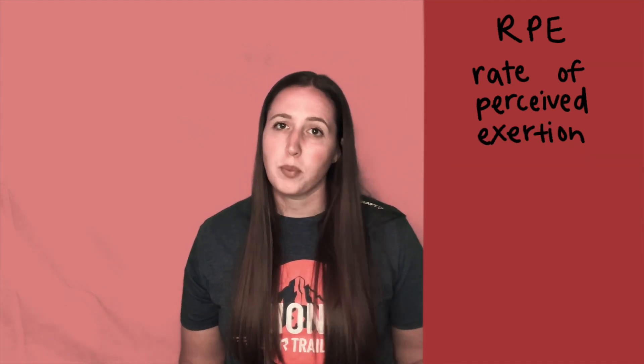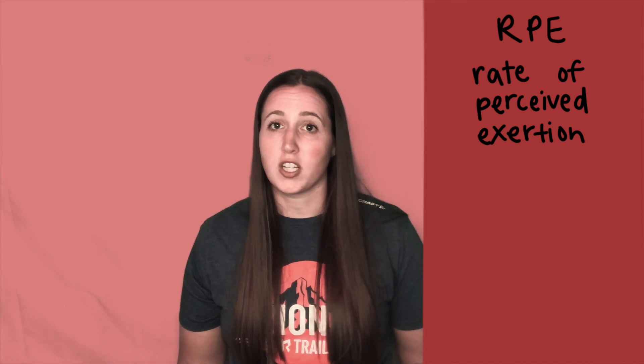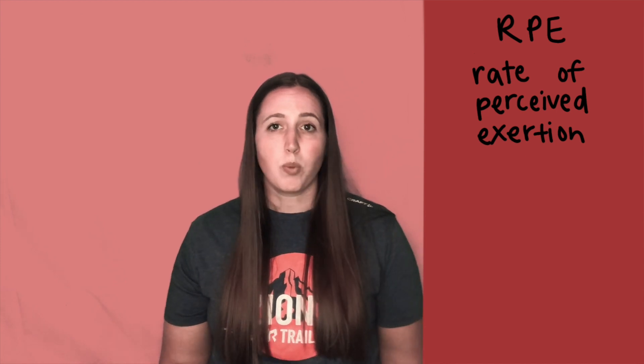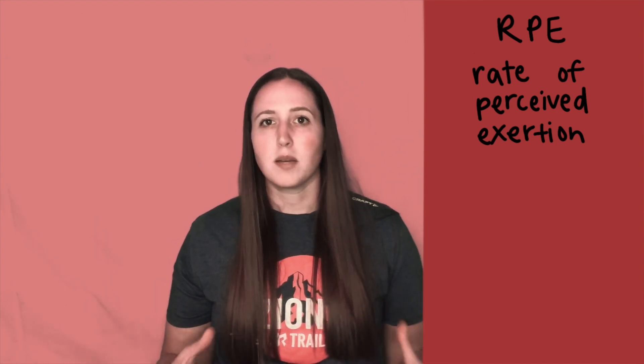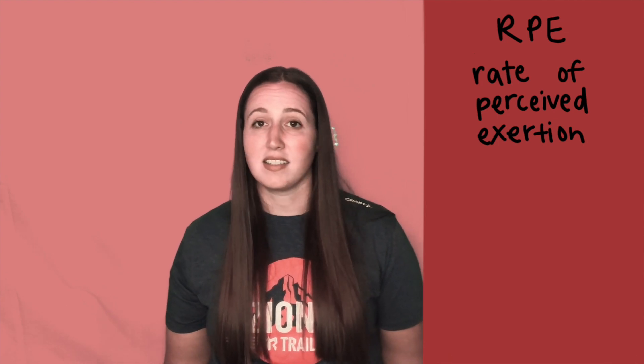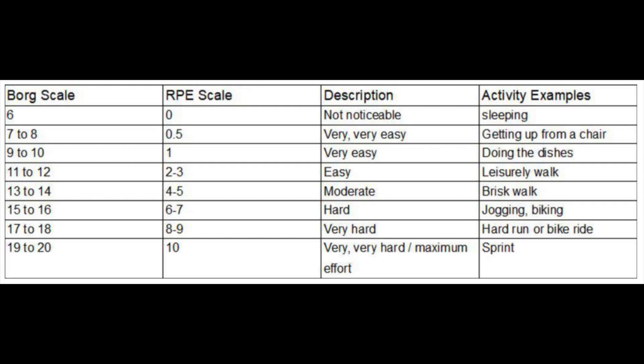RPE is rate of perceived exertion, also known as the Borg or the modified Borg scales, and this is a subjective measure of exercise intensity. It used to be measured on a 6 to 20 scale as shown here, but more modernly has used the modified Borg scale, which is a 0 to 10 measurement and is a little bit easier for people to comprehend in the moment.